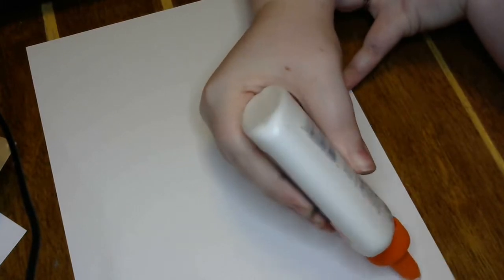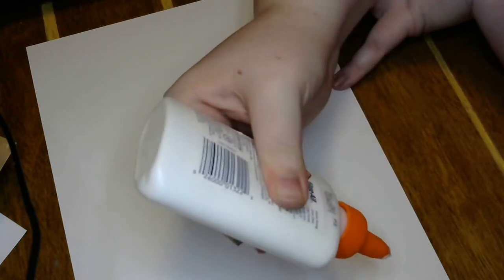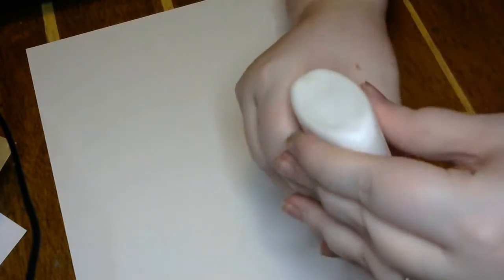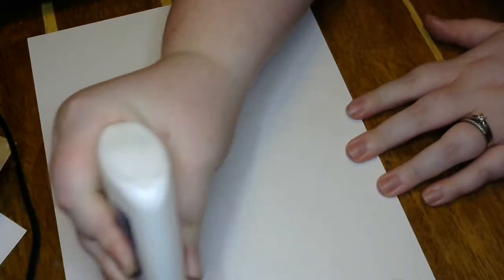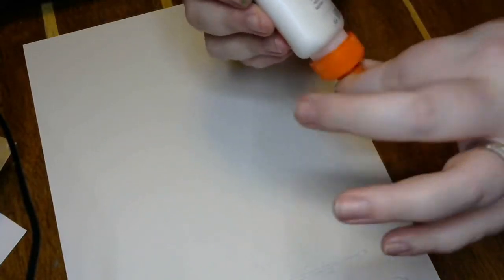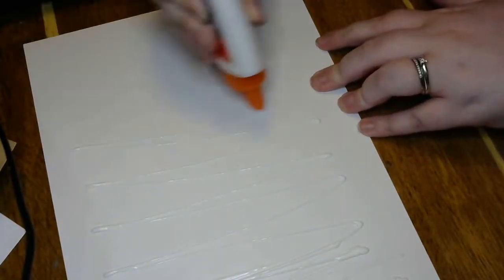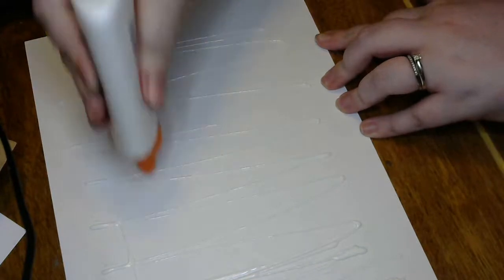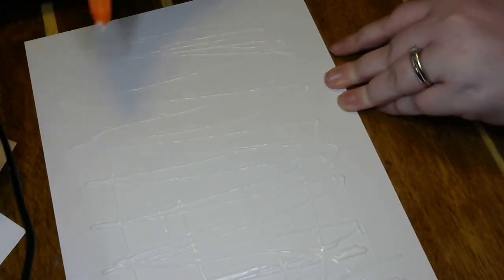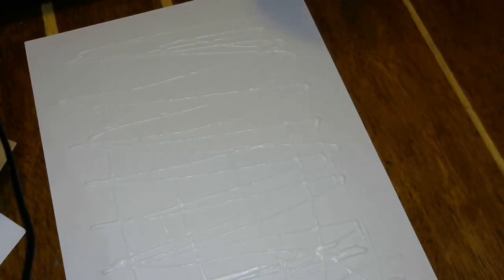So what I've got is some Elmer's glue - you can use whichever glue you want, but this stuff is cheap. I'm just going to get some glue going and just kind of doing lines. There we go. Just kind of like doing lines, maybe going the other way as well. This is kind of like a random design just so that you got a little marbling going on.